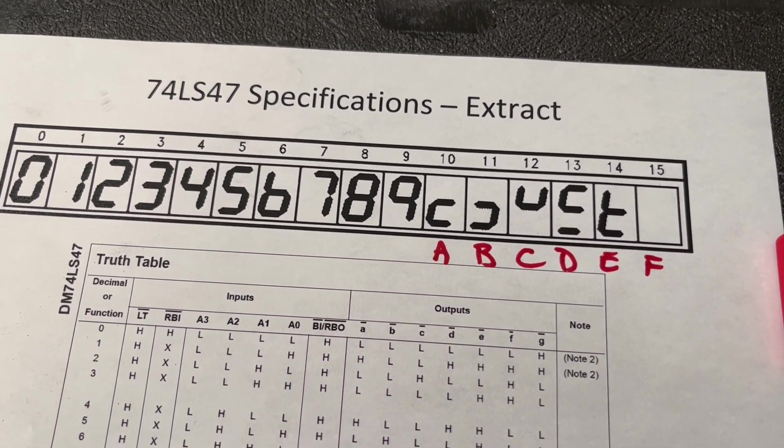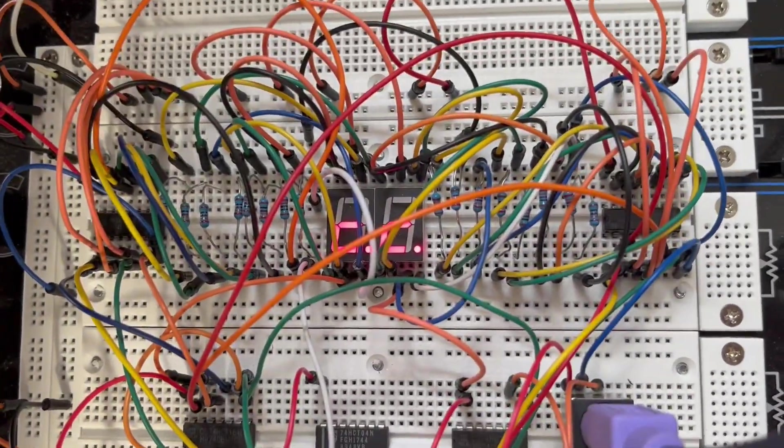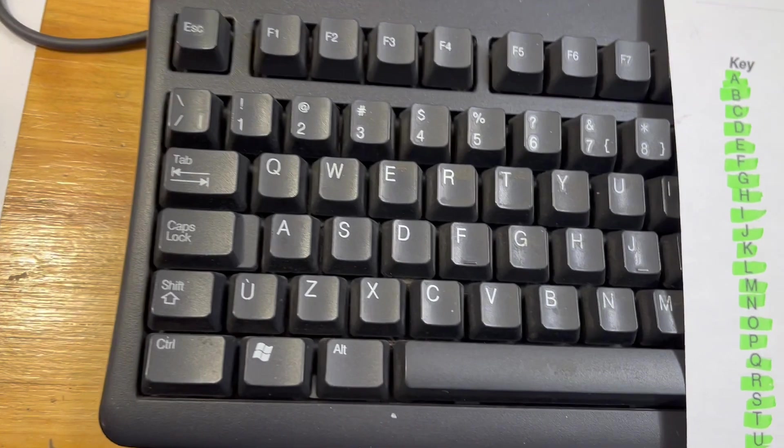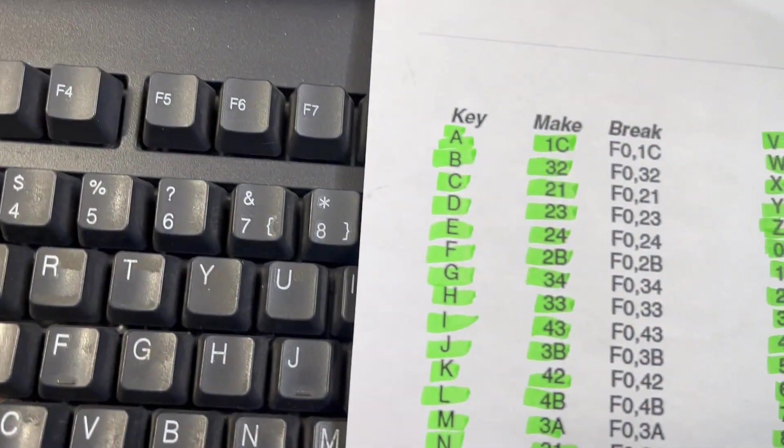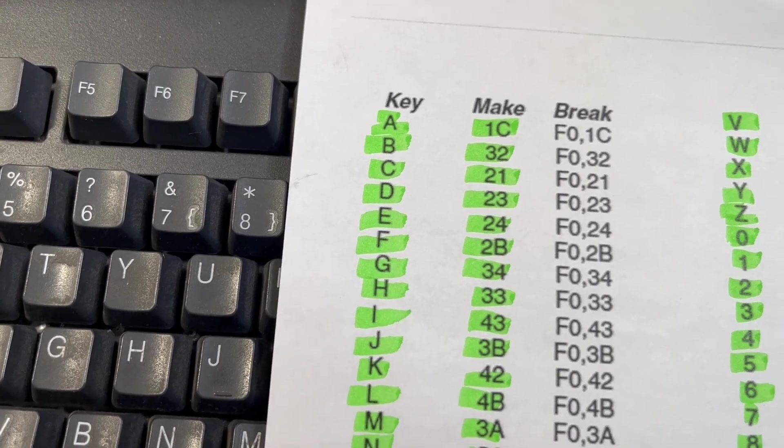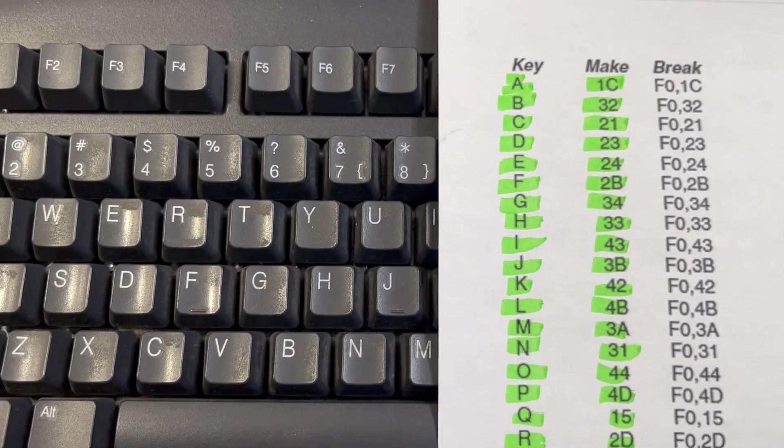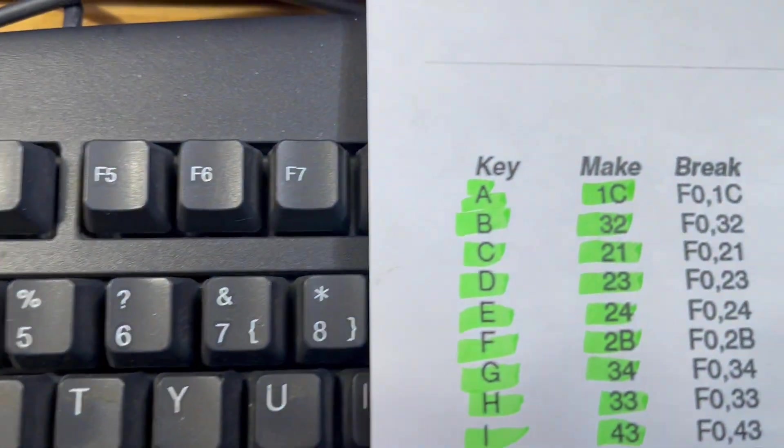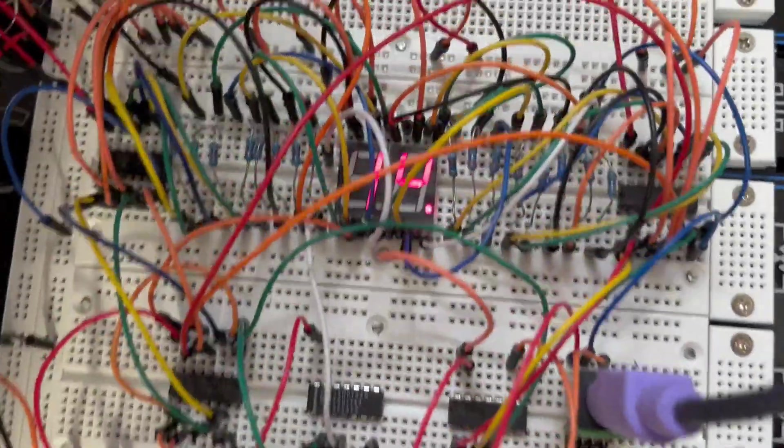Take a look at what we have on the display right now—it's a double A, related to the keys we press. Looking at the correspondence between hexadecimal codes and keys, if you type the letter A, you should read 1C. You can see on the display 1C with that little symbol for C.